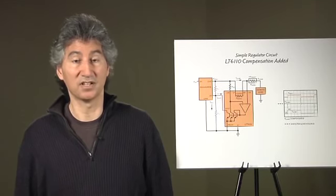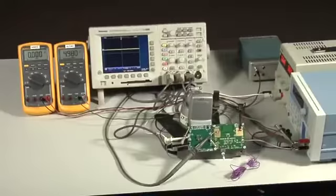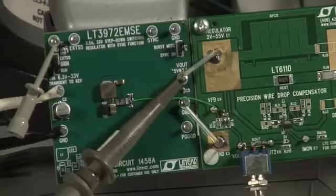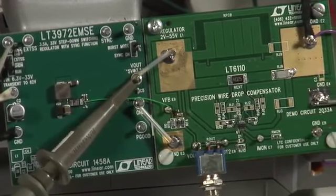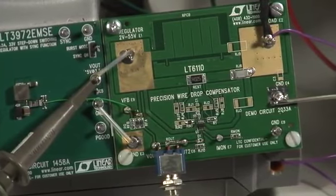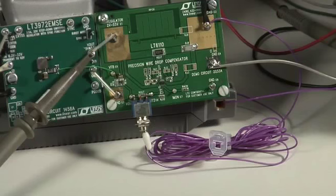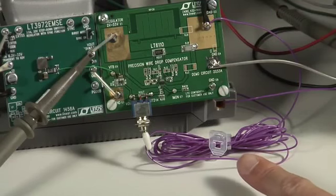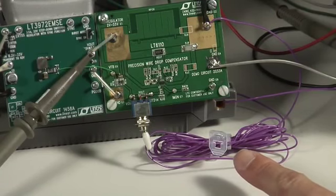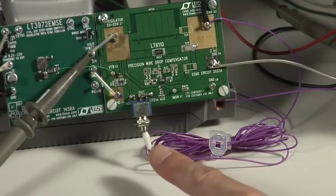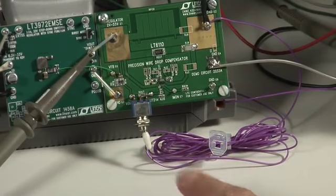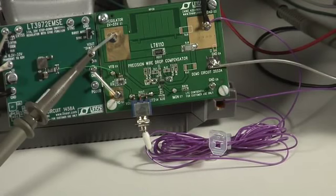Now let's go to the lab. Here is an example of a 5 volt power supply circuit using the LT3972 switching regulator and the LT6110 cable drop compensator. There are 10 feet of 24 gauge wire added in series with the load. A switch has been added from the output of the LT6110 to the control point of the regulator circuit to demonstrate the effectiveness of the compensation.